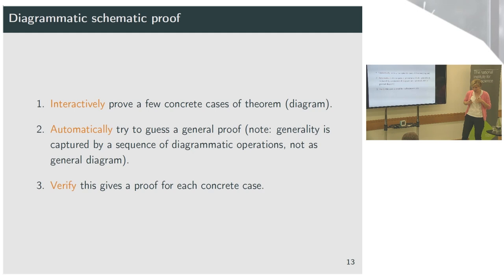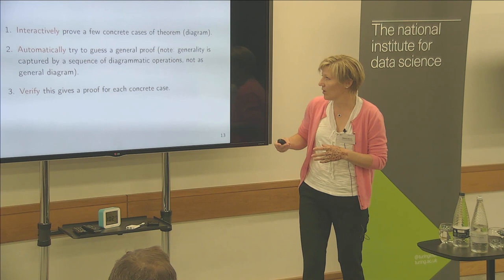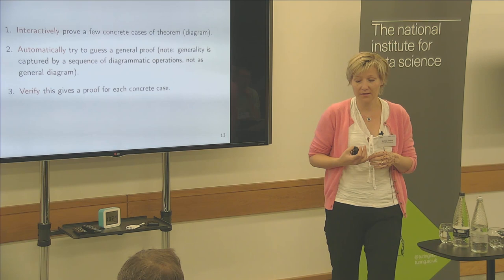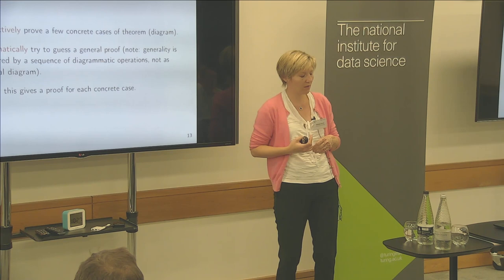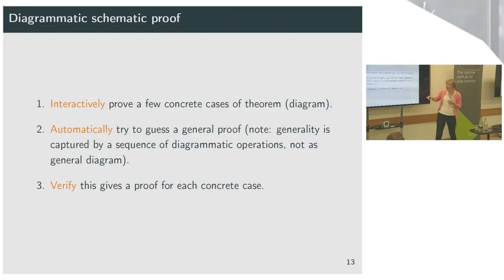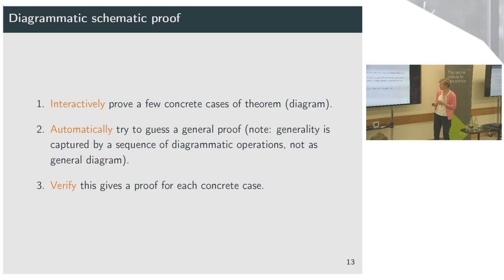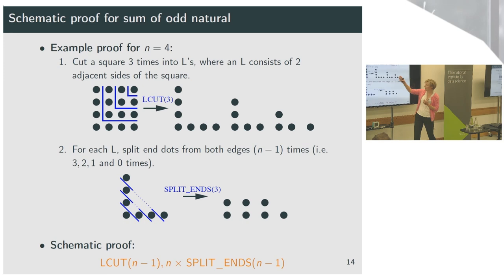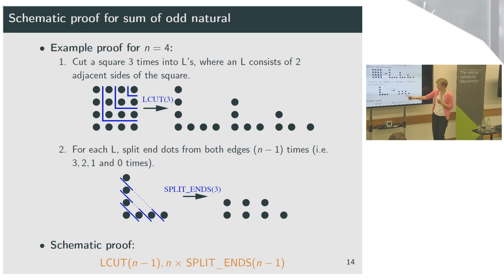And so how can we use this now in diagrammatic reasoning? Well, we can first prove formally examples, concrete examples interactively with diagrams. Then we automatically extract this proof, which is our intelligent guess. And then as a computer scientist or as a logician, we need to verify that our procedure was done correctly. So these are the three steps. And so in terms of the sum of odd natural numbers, you would take, for example, the case for n equals to four, and you would cut it into three, see these three cuts into l's. Now that's my result. And then I will do maybe split n's to show that each l is an odd natural number. And so my schematic proof would say I'm going to do l cut n minus n times, which here is the three times. And then for each l, so n times, I'll do split n's n minus one times. So you can see that it's parametrized over n. And so whatever n I give it, it will produce me a proof for that particular case.